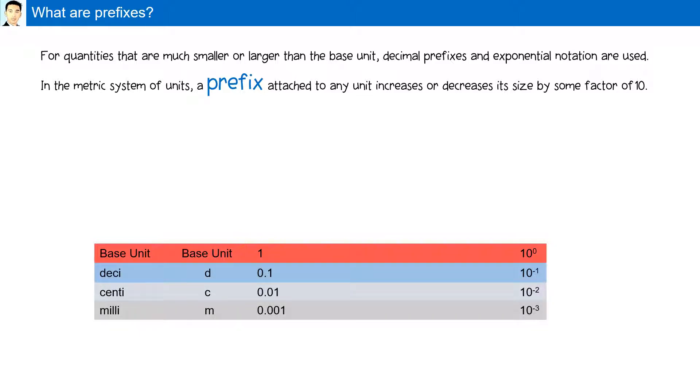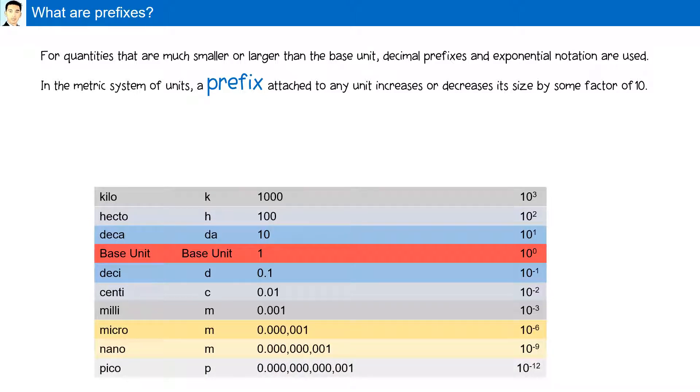Going smaller, we have deci, centi, and milli. Going larger, we have deca, hecto, and kilo. Going even smaller, we have micro, nano, and pico.